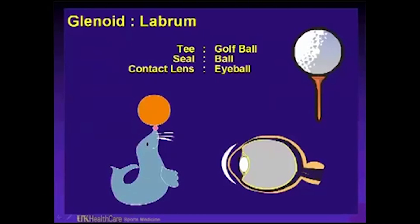Another analogy: think of the humeral head as a big golf ball in a shallow tee. A Bankart lesion anteriorly — if you knock off or fracture that glenoid rim — you no longer have the normal concavity of the glenoid. It's almost like breaking off the front part of a tee. If you try to use that tee to stabilize your ball, the ball will fall off — hence the instability that occurs.